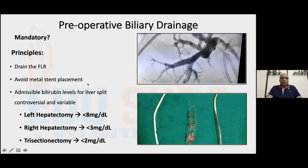Regarding admissible bilirubin levels for liver resection: these patients are not in cholangitis, they are jaundiced and resectable. Can you resect without draining? The answer is certainly yes. For a left hepatectomy, we have done it up to around bilirubin of 8, and Western colleagues do it at even 10 and 12. For right hepatectomies, most would prefer to drain the biliary system of the FLR and get bilirubin down to under 3. For trisectionectomies, get as near normal as possible. It's not always possible because sometimes an undrained duct segment keeps giving repeated cholangitis — a big problem in hilar cholangiocarcinomas.